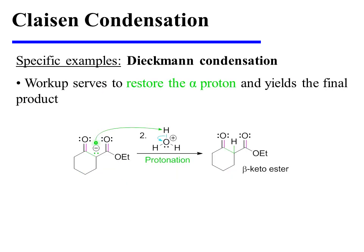Workup with aqueous acid serves to restore the alpha proton and yields the final product: a cyclic beta-ketoester.